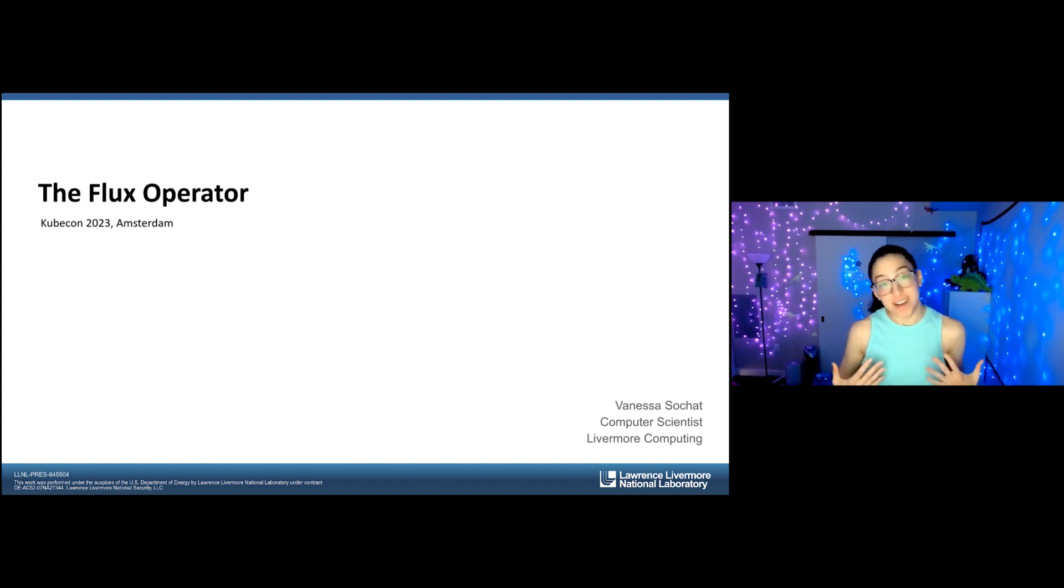Hi, fellow Kubernetes. I'm Vanessa Socket, and I'm going to be talking about an example use case for index jobs, a project called the Flux Operator that we've been working on at Lawrence Livermore National Lab. Let's get started.